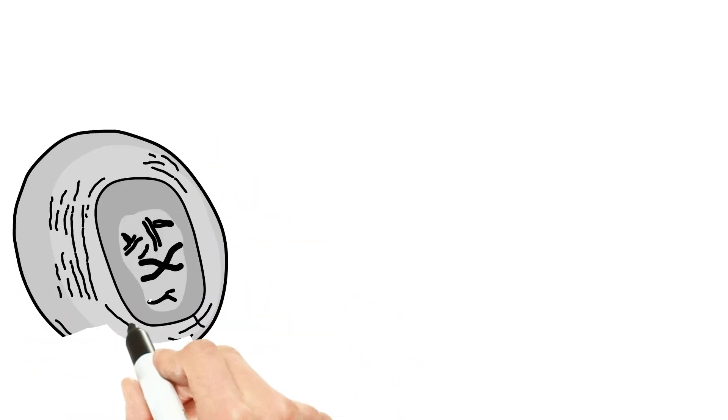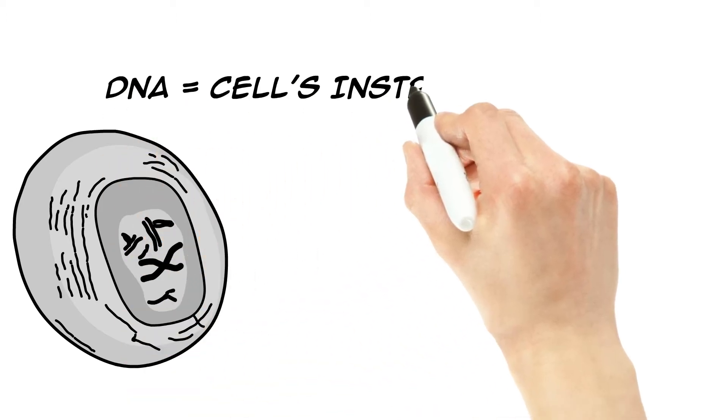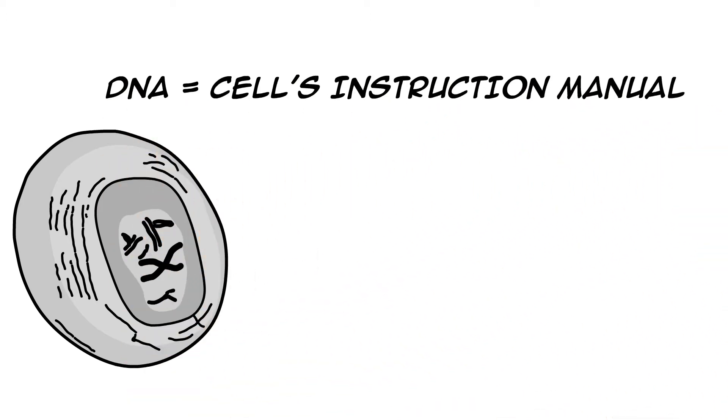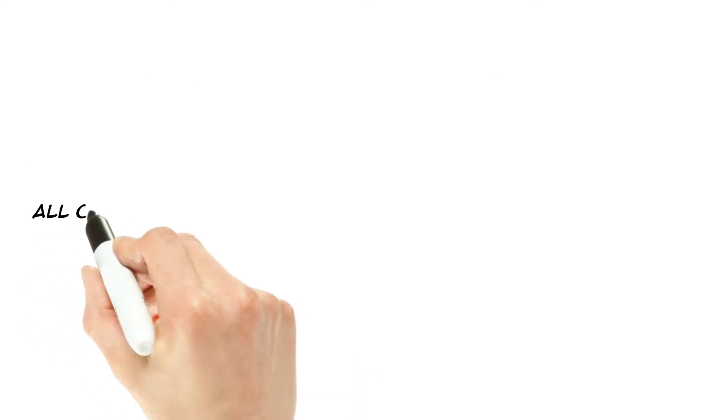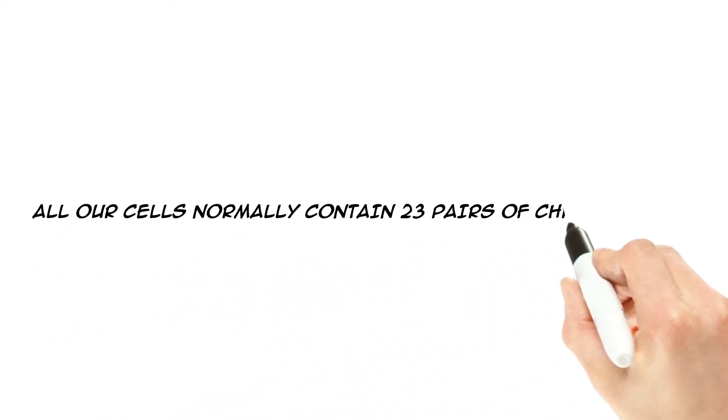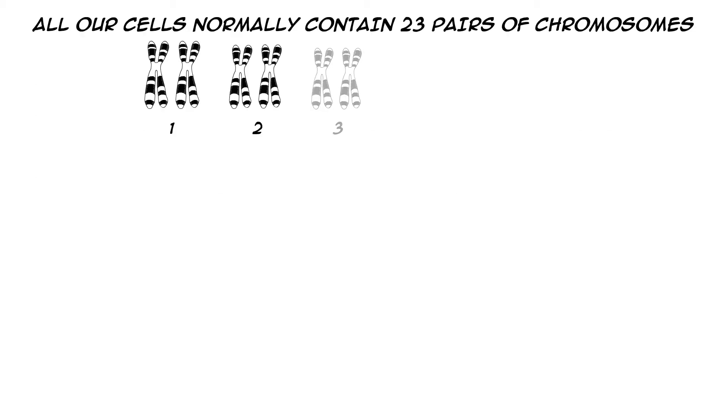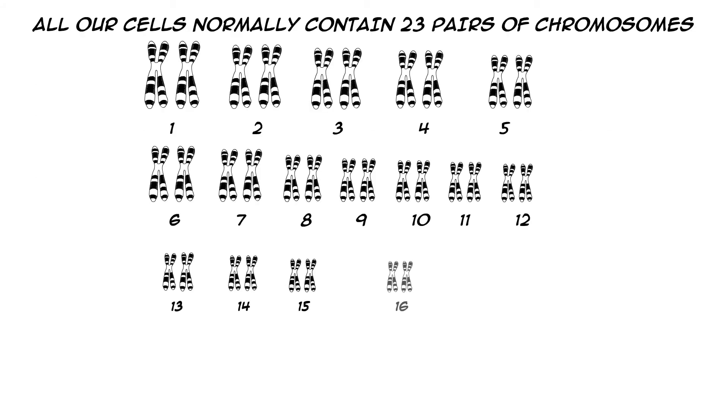Now for the technical part. Many of these differences are linked to the cell's DNA, the instruction manual every cell carries that tells it what to do in the body. DNA is stored inside the cell in the form of chromosomes, which are shaped like the letter X. All our cells normally contain 23 pairs of chromosomes, and scientists have numbered them for convenience.